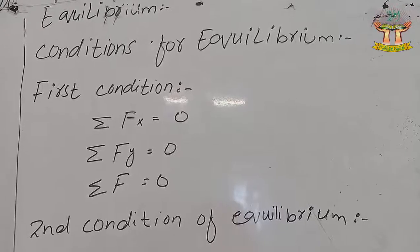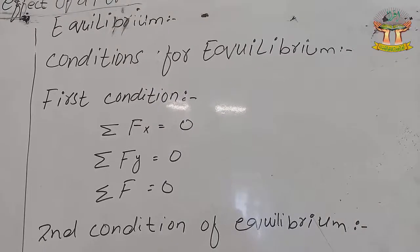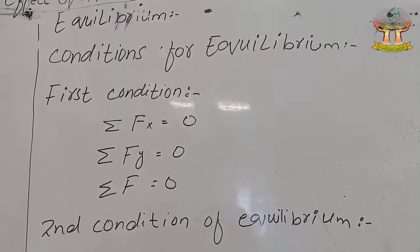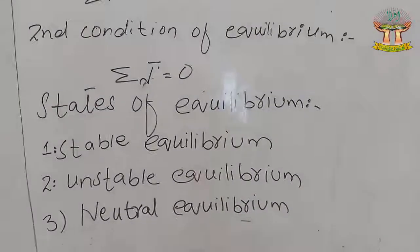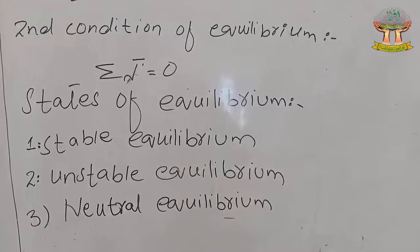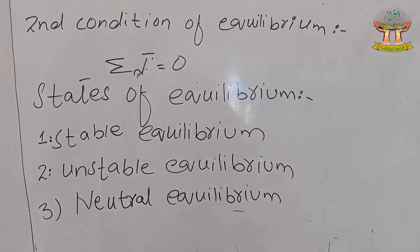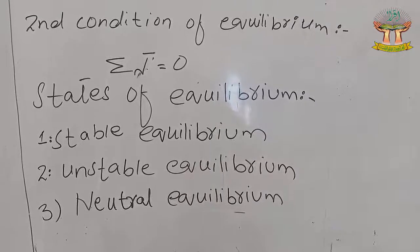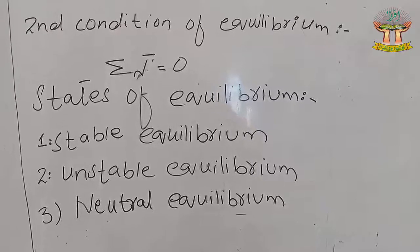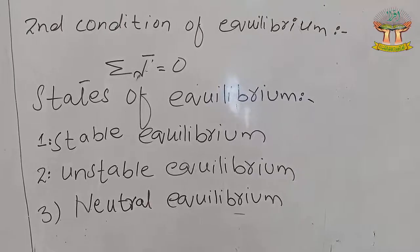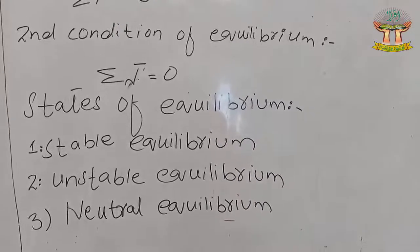This is represented using summation notation: summation Fx equals zero, summation Fy equals zero, and summation F equals zero. The second condition of equilibrium is also called rotational equilibrium. It states that a body is in rotational equilibrium if the algebraic sum of all torques acting on the body is zero. That is, summation tau equals zero.